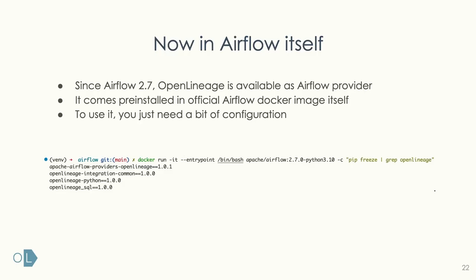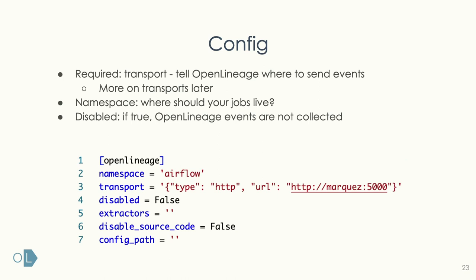Since Airflow 2.7, OpenLineage is available as an Airflow provider and pre-installed in the official Airflow Docker image. To use it, you just need a bit of configuration. You configure where you want events sent, described by a transport JSON specifying the output type — a URL, console print, Kafka, or other options. The namespace identifies your Airflow instance. If you have multiple Airflows, you can differentiate between events using the namespace.